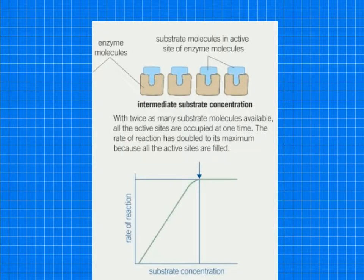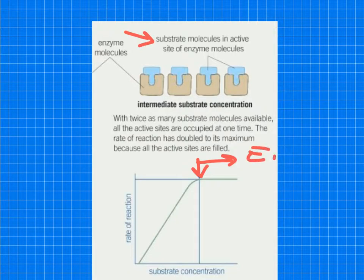Now we get to a position as you increase the substrate concentration to where the graph remains constant. So you can see it remains constant at that point there. And this is the reason behind that is that all the substrate molecules in the active sites of the enzyme molecules. So enzyme substrate complexes are occurring, but no further rate of reaction can occur because at this point onwards, it is the enzyme that is limiting. It's not the substrate, it's the enzyme concentration at this point here. So we say that all the active sites are occupied at one time and the rate of reaction has doubled to its maximum because all the active sites are filled.